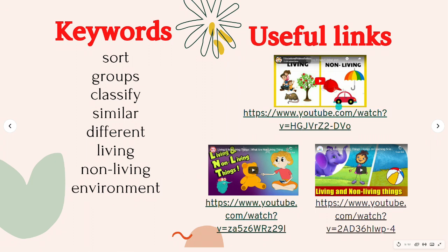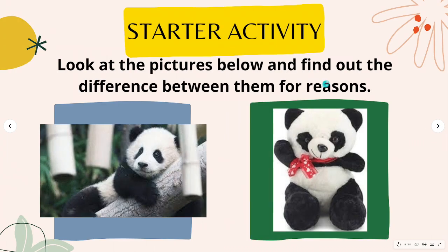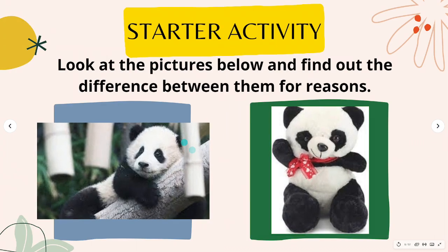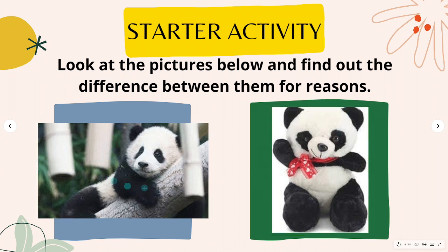Watch these videos about living and non-living things to help you understand more about the lesson. Now, let's look at the pictures below and find out the difference between these two pandas. Scientists look for things that are the same and different. They group things such as animals in the sea and other ways. Apply what you have learned from Unit 1 Plants and Unit 3 Living and Growing to find out how they are different to one another.